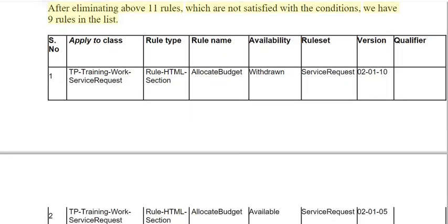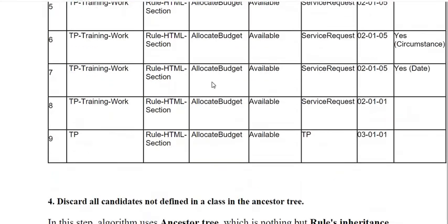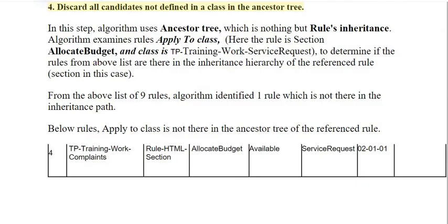After eliminating the 11 rules that do not satisfy the conditions, we have 9 rules in the list. Step 4: Discard all candidates not defined in a class in the ancestor tree. In this step, the algorithm uses the ancestor tree, which represents rules inheritance. The algorithm examines the rule's apply-to class — here the rule is section 'Allocate Budget' and class is TP Training Work Service Request — to determine if the rules from the above list are in the inheritance hierarchy of the referenced rule.